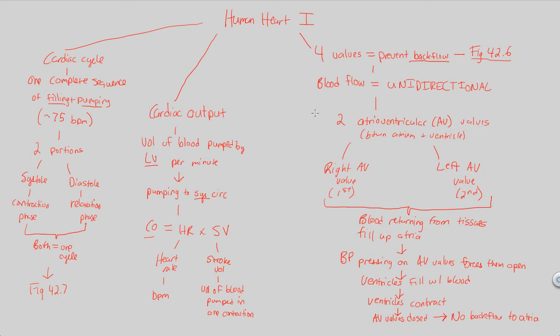So no backflow to the atria. And that covers our first look at the human heart. We now understand the two first initial valves, the AV valves. We're going to continue looking at these valves that prevent backflow in the next flow chart.